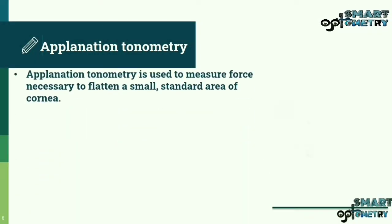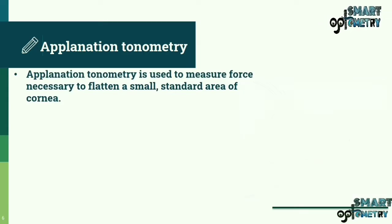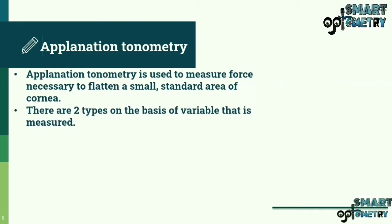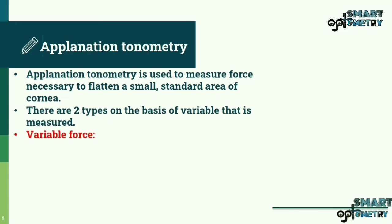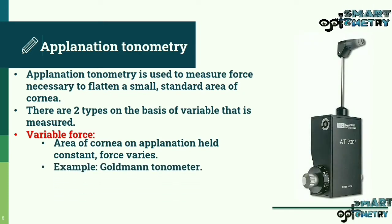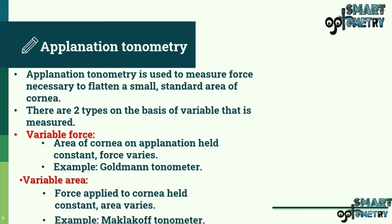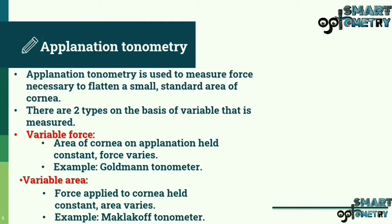Aplanation tonometry is used to measure the force necessary to flatten a small, standard area of the cornea. There are two types based on the variable measured. Variable force: the area of cornea on aplanation is held constant while force varies — example, Goldman tonometer. Variable area: force applied to the cornea is held constant while area varies — example, Maklakov tonometer.